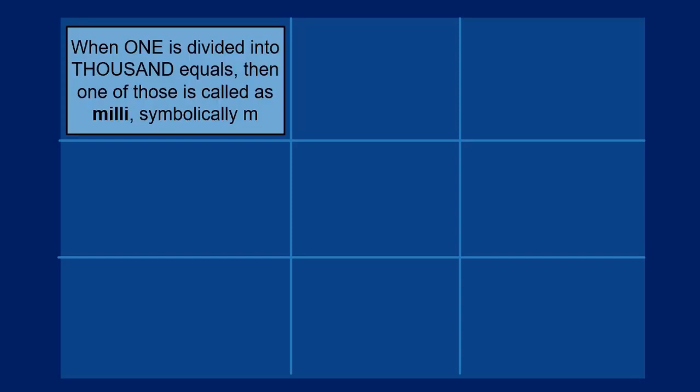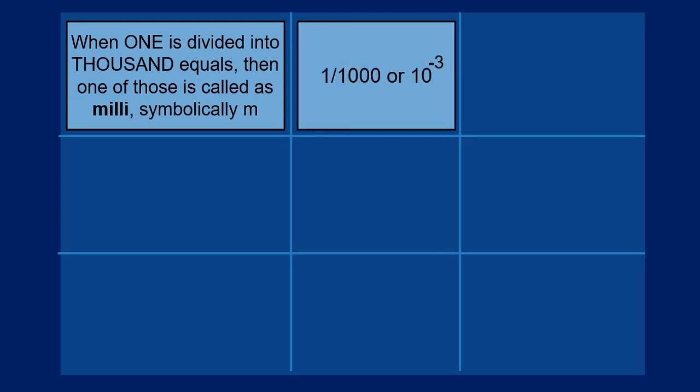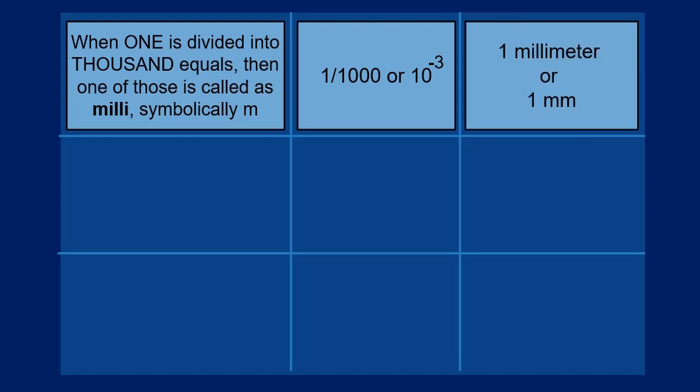When one is divided into 1000 equal units, after division, each one is called as milli, represented with a small letter m. There are 1000 such quantities. In mathematics, symbolically, we write each of them as one divided by one followed with three zeros, that is one by thousand, or ten raised to the power of minus three. In physics, we call one of these equal lengths as one millimeter, written as one followed by a small letter m and a small letter m.